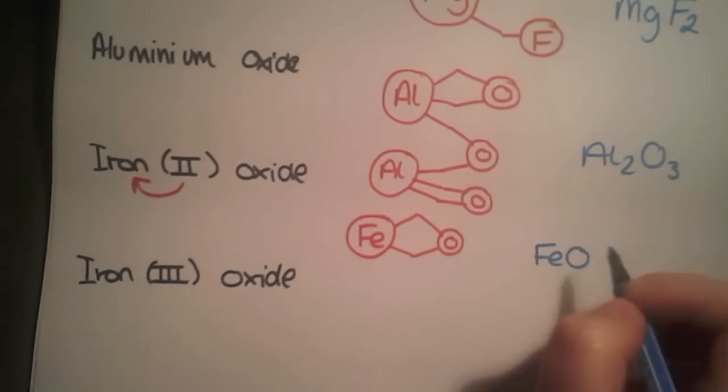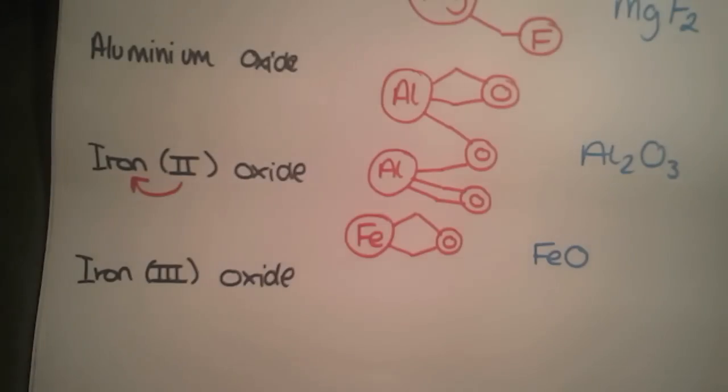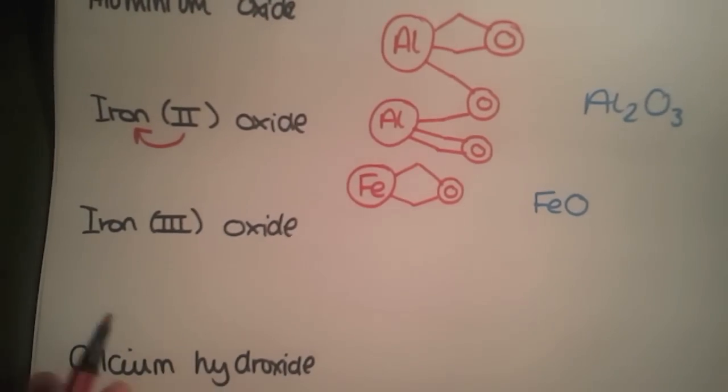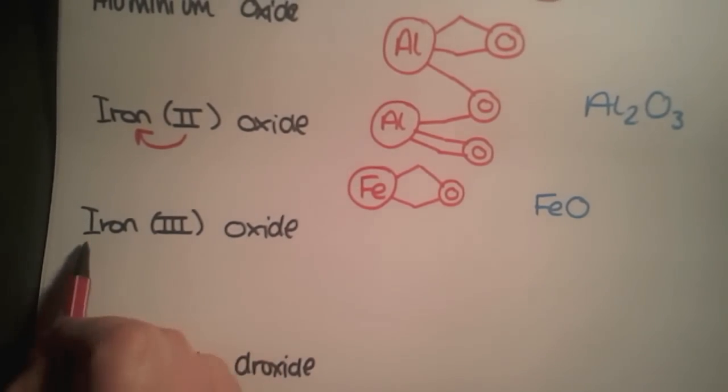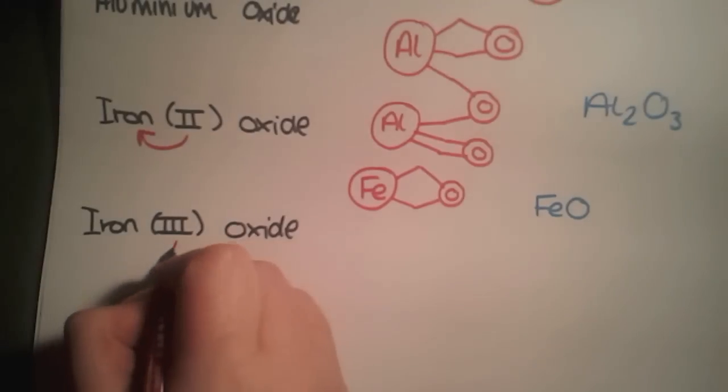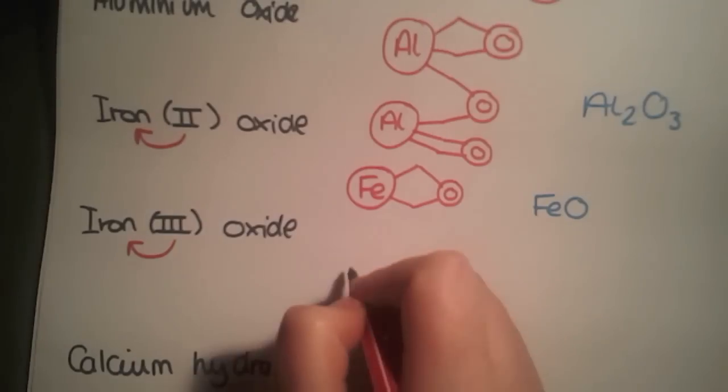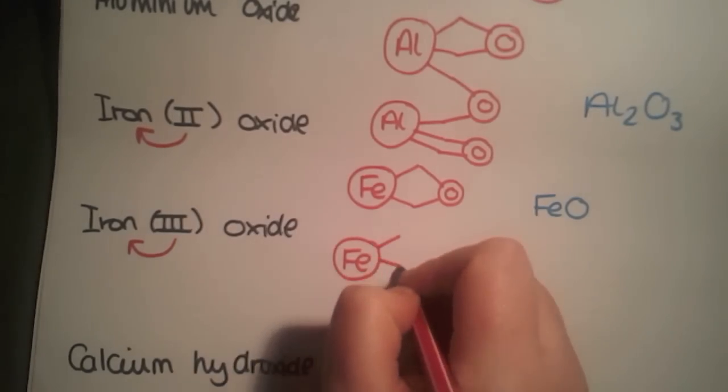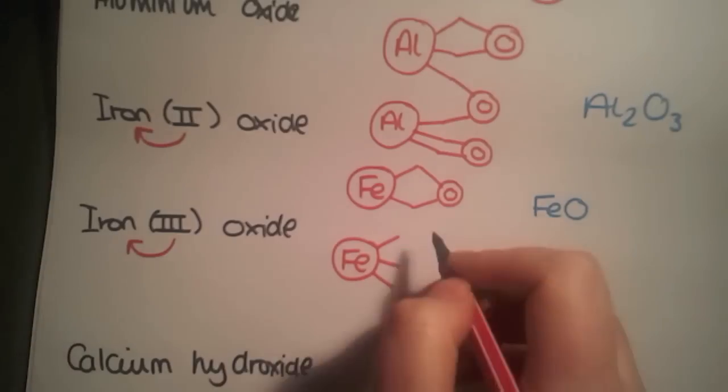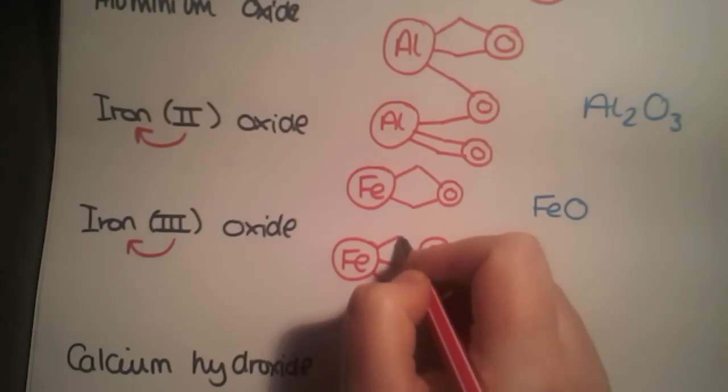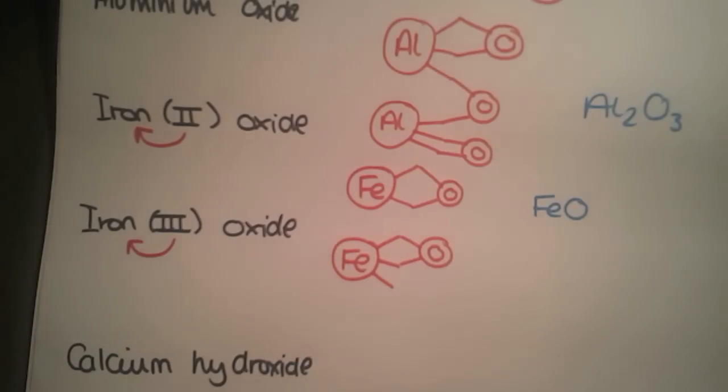This next example also looks at iron, so this is the other transition state of iron, and it's iron three oxide. So the three is the valency of iron within this compound. So we write down Fe, we have the three bonds, and this compound in structure is just quite like the aluminum oxide that we had up above.